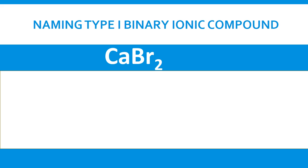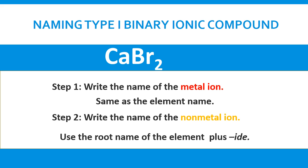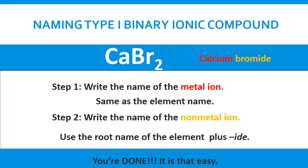Let's look at naming Type 1 binary ionic compounds. Write the name of the metal ion — the name is the same as the element. Then write the name of the non-metal ion using the root name plus the suffix '-ide'. So for CaBr₂, the metal is calcium and the non-metal is bromine; the root is 'brom-', add '-ide', giving us calcium bromide.